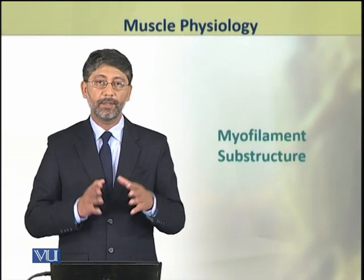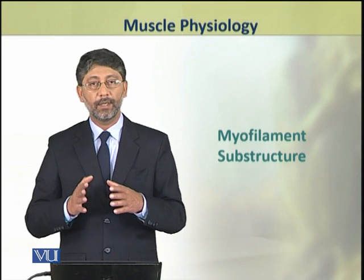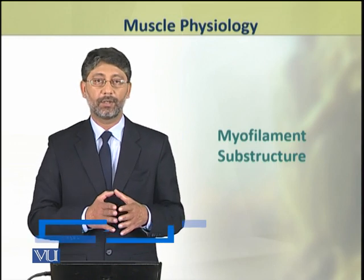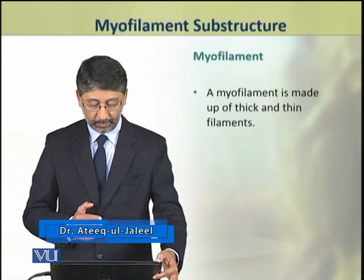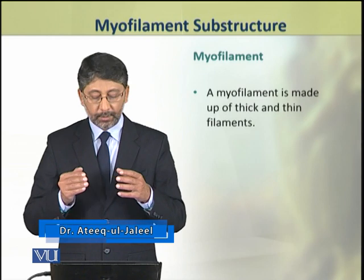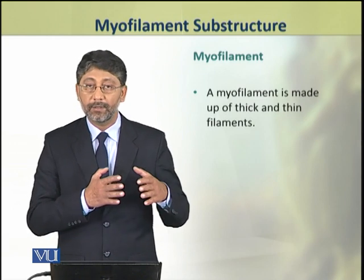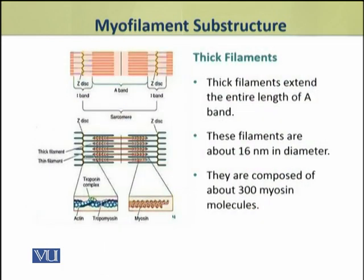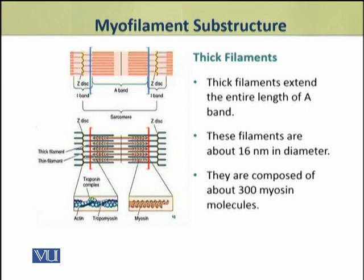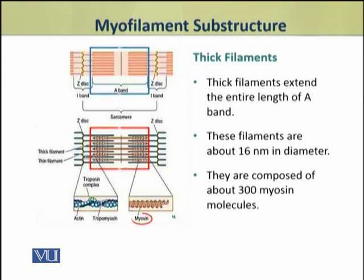In this topic we shall discuss the substructure or ultrastructure of myofilaments. A myofilament is composed of thick and thin filaments. The thick filaments extend the entire length of the A band. These filaments are about 16 nanometers in diameter and are composed of about 300 molecules of myosin protein.